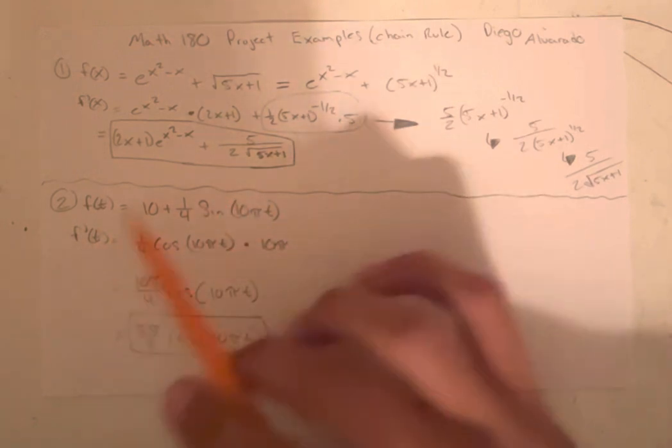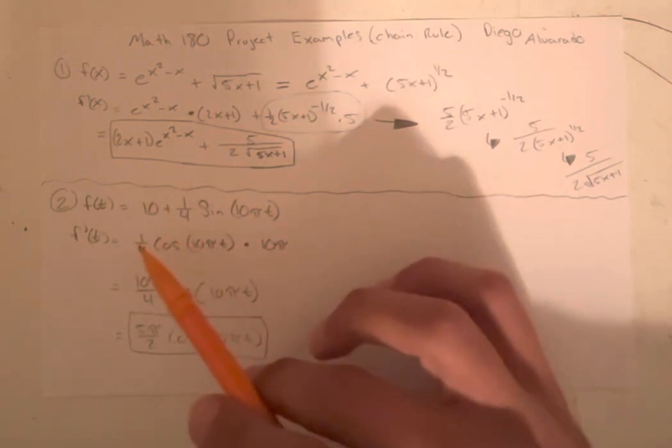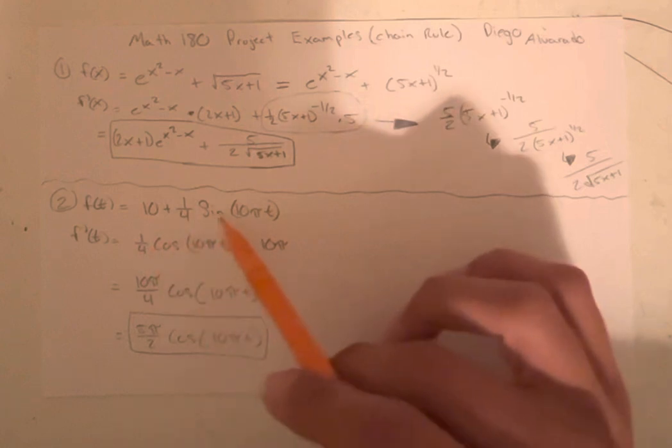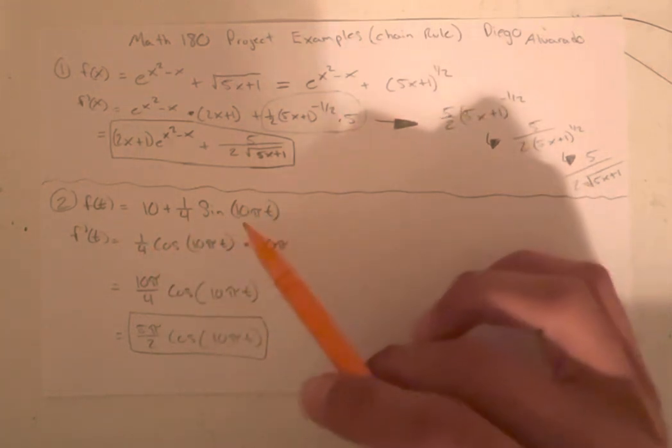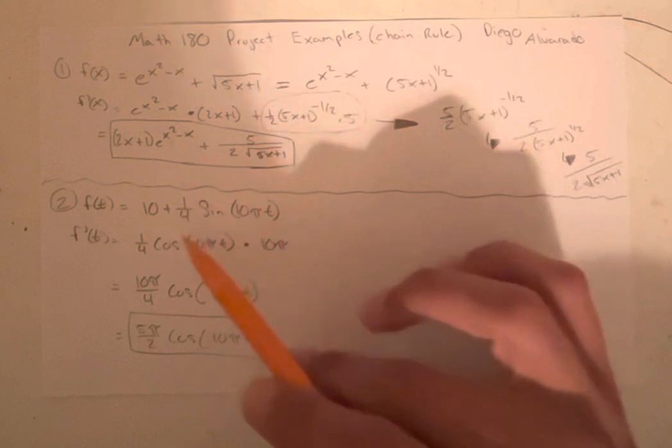So we would get, the 10 goes away, and then we take the derivative of 1 4th sine 10 pi t. You take the derivative of the outside function first, which is sine of x. Pretend this is like x.